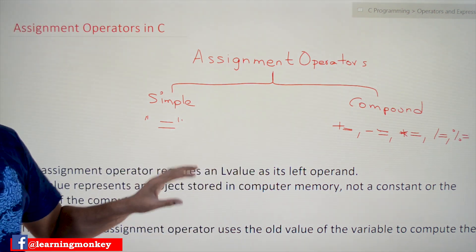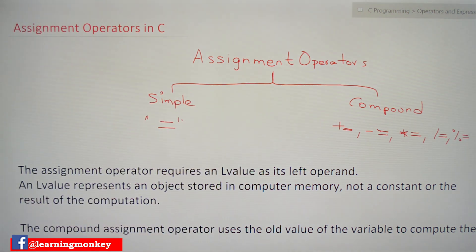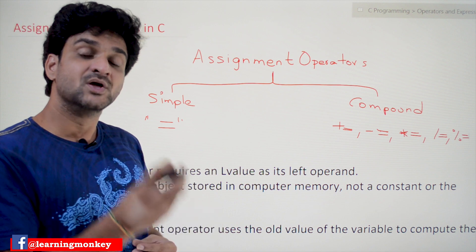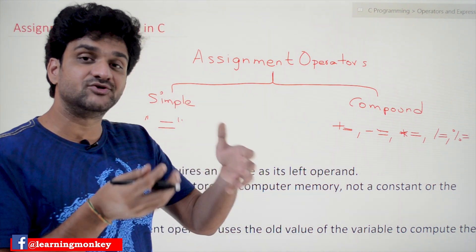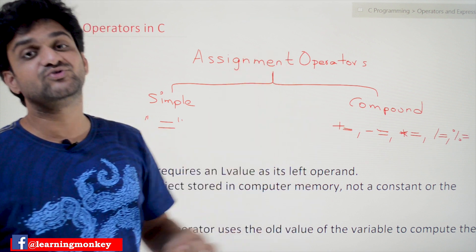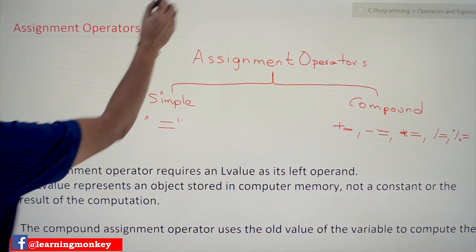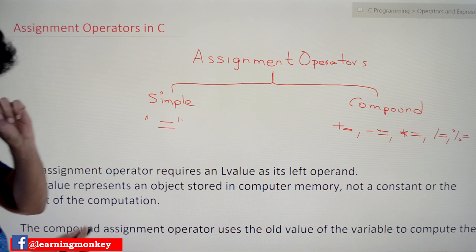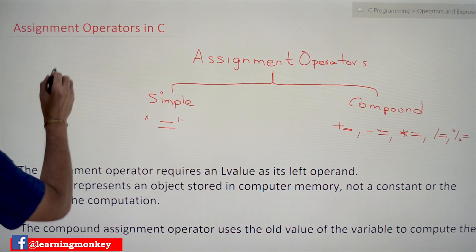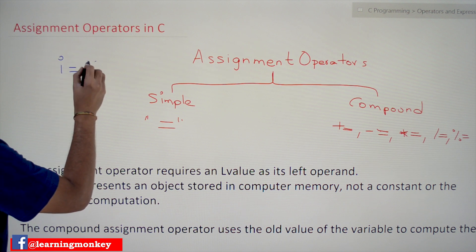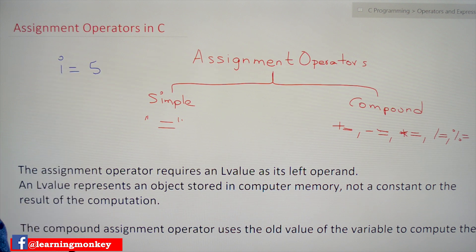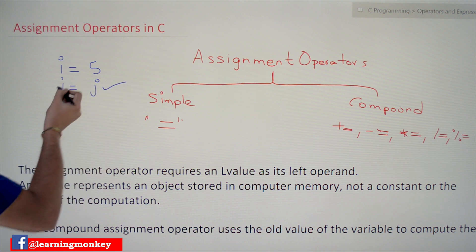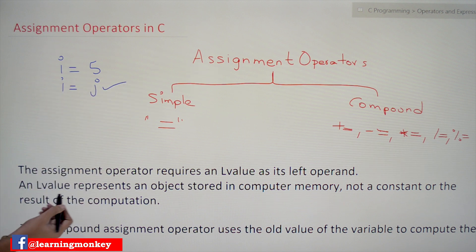Coming to the simple assignment operator — the assignment operator is used to store a value into a variable. That value can be a constant value, the value of another variable, or the result of an expression. For example, a constant value can be stored into a variable, or similarly, I = J means the value of variable J gets stored into variable I.